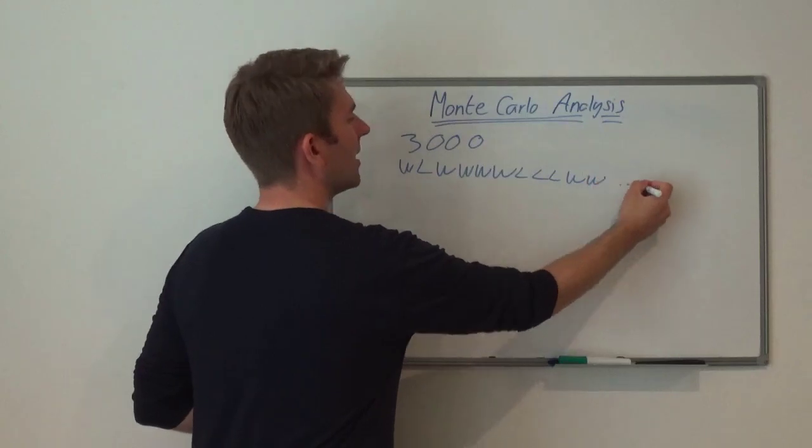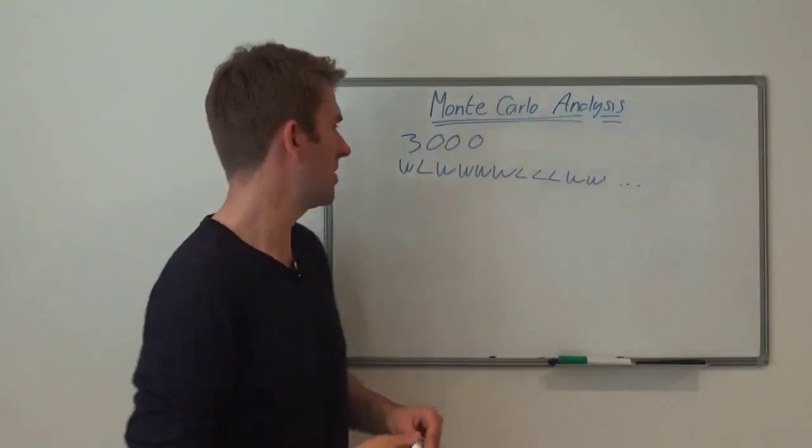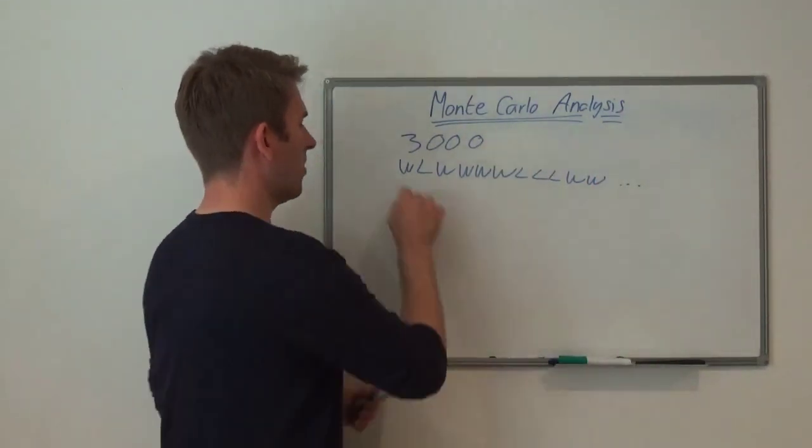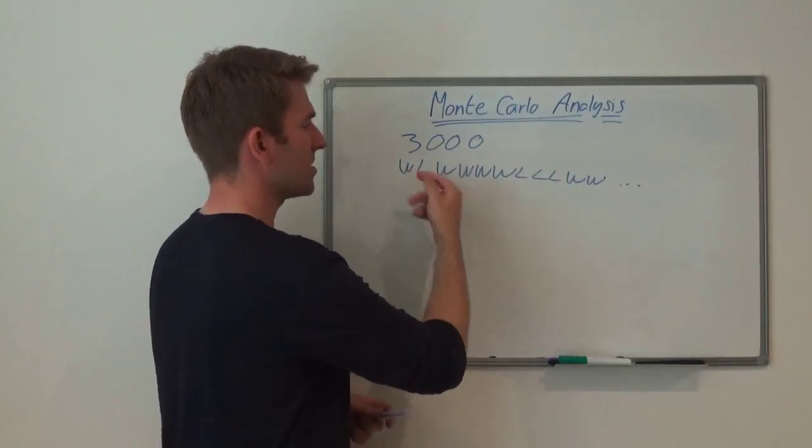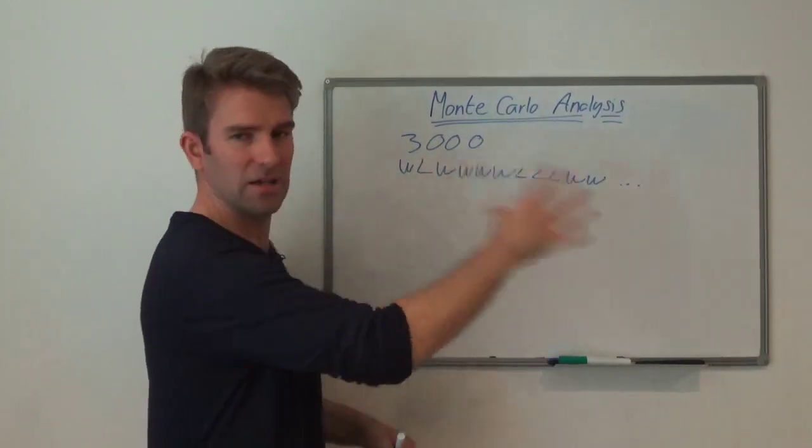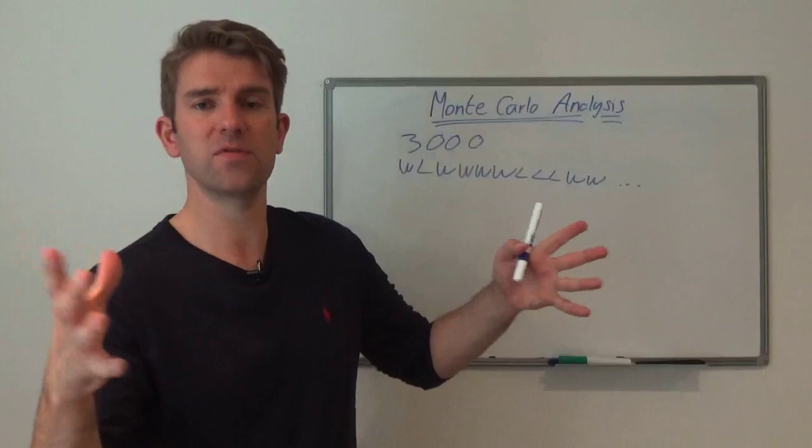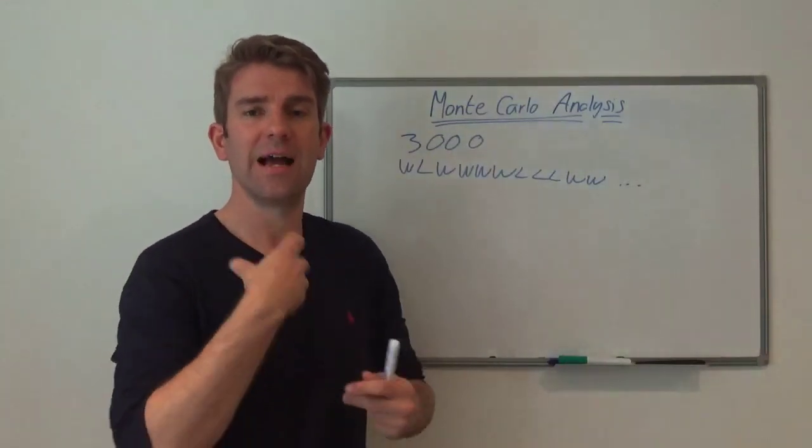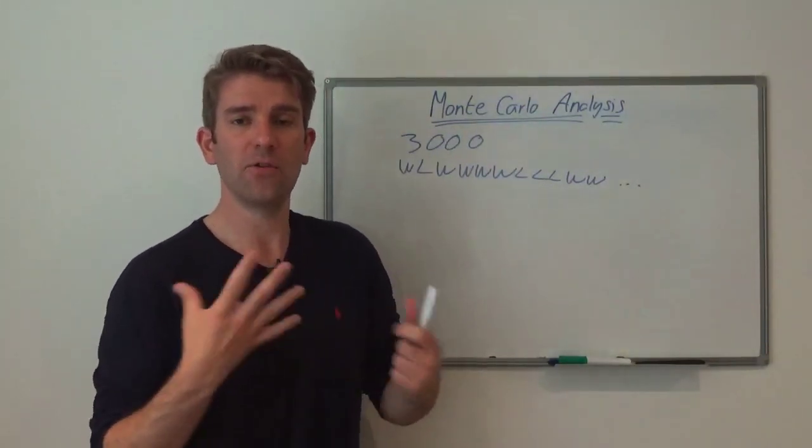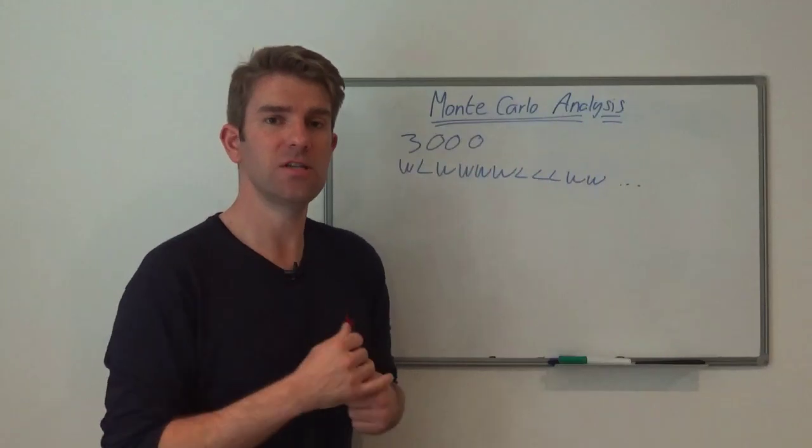You can imagine the situation goes on and on. That one is X amount, that one is minus X, minus Y, plus Z. You get the idea. You have your statement of trades and you have your performance for the strategy.